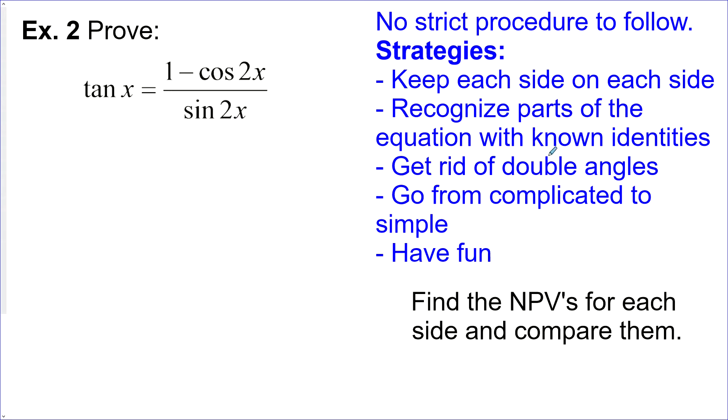Recognize parts of the equation with known identities. This is sine's double angle, so I can use the double angle identity to get rid of that. Get rid of double angles. Generally, you want to break it down into sine and cos. Generally, we want to go from complicated to simple. And last is have fun.